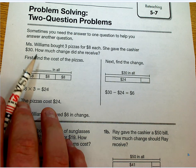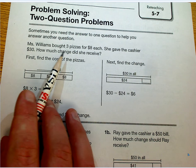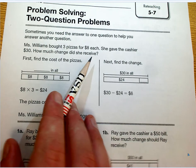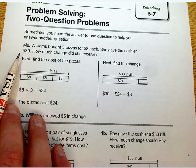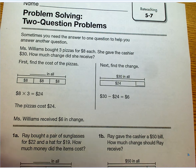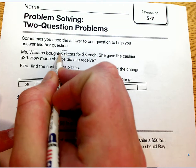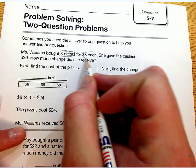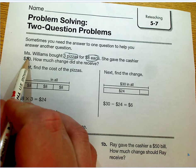So let's take a look at this question. It says, Mrs. Williams bought three pizzas for eight dollars each. She gave the cashier thirty dollars. How much change did she receive? So the big important pieces of information here are three pizzas and eight dollars each, and then she gave the cashier thirty dollars. These are all important things.